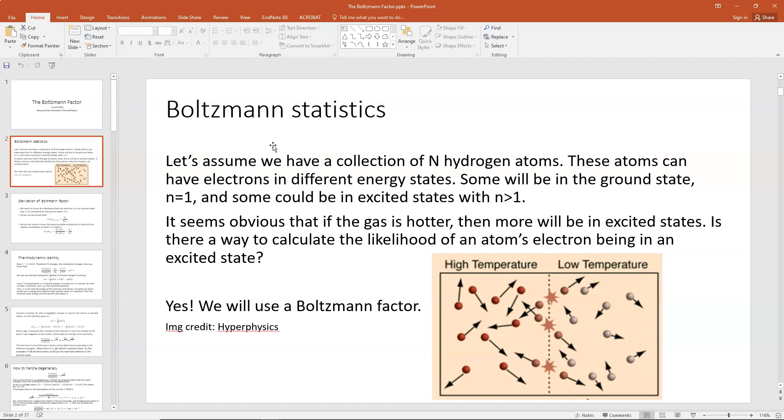So what we would like to know for thermal physics and thermodynamics is: is there a way to calculate the likelihood that an atom's electron is in an excited state or in any state whatsoever? And the answer is yes. We're going to use Boltzmann factors to do that.